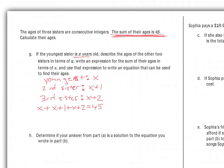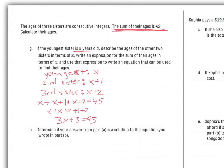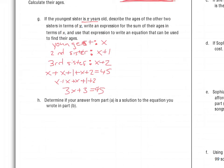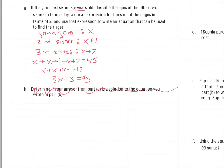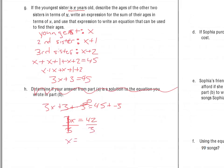So sister 1 is x, plus sister 2 which is x plus 1, plus sister 3 which is x plus 2, equals a total of 45. If I simplify, I get all my x terms together: x plus x plus x plus 1 plus 2, which is 3x plus 3 equals 45. For the inverse operation, add the opposite of 3 to both sides. This adds up to 0, leaving 3x equals 42. Divide both sides by 3, and x equals 14.